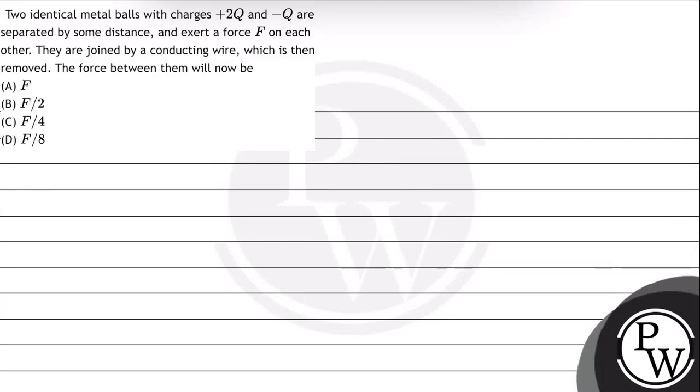Hello Bacho, let's read this question. The question says two identical metal balls with charges plus 2Q and minus Q are separated by some distance and exert a force F on each other. They are joined by a conducting wire which is then removed. The force between them will be now.